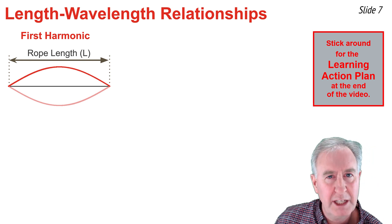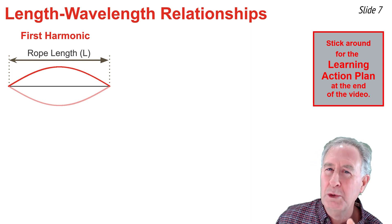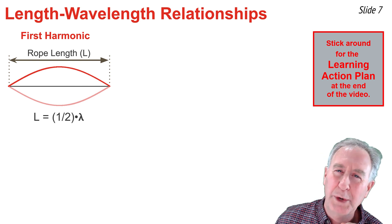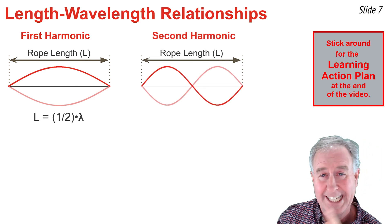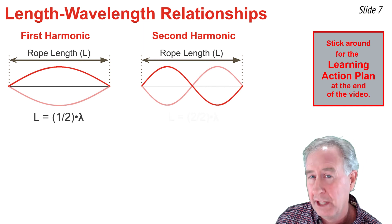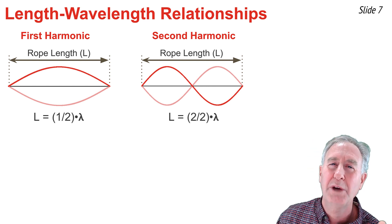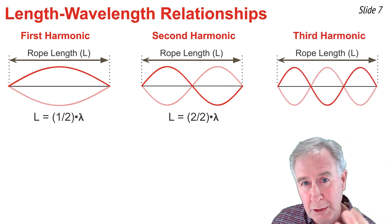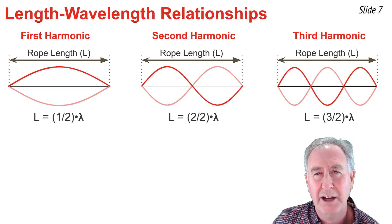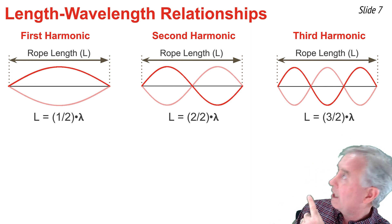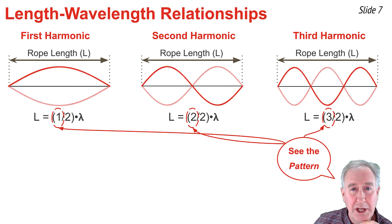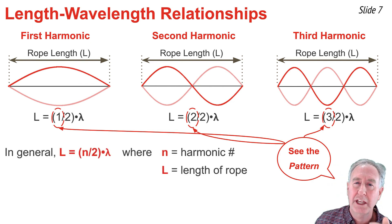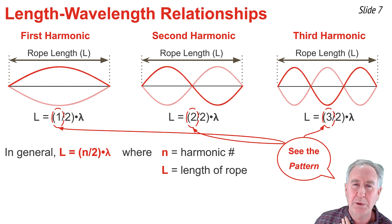For the first harmonic, from end to end there is one loop, and a loop equals half a wavelength, so L equals one-half of a wavelength. For the second harmonic, I can count two loops from one end to the other, so the length equals two-halves of a wavelength. For the third harmonic, there are three loops, so the length is equal to three-halves of a wavelength. Looking at these equations, there is a pattern — one over two, two over two, three over two — so in general, L equals N divided by two multiplied by the wavelength, where L is the length of the rope and N is the harmonic number.